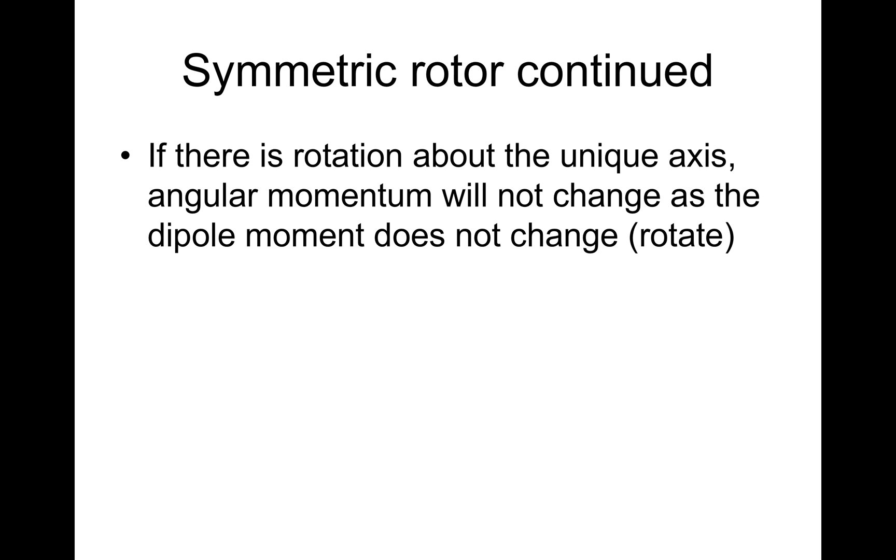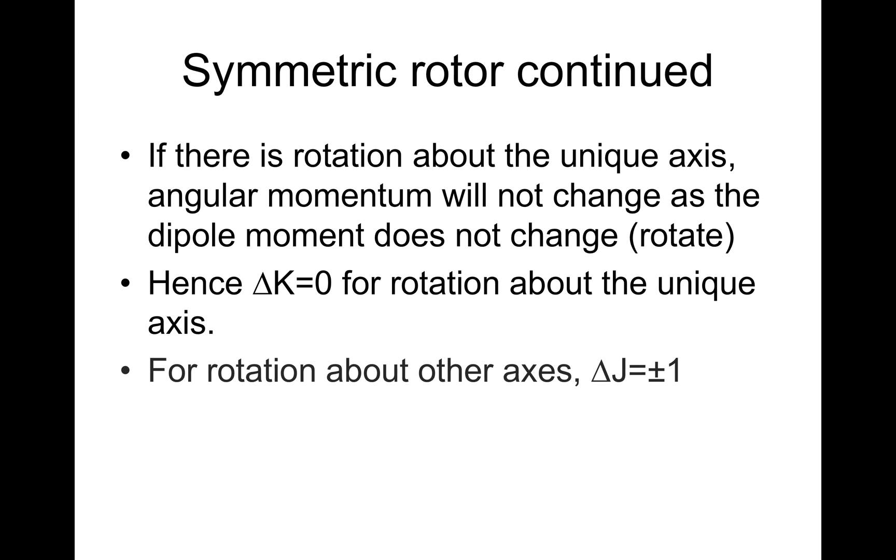If there is rotation about the unique axis, angular momentum will not change, as the dipole moment does not change. Hence, ΔK equals 0 for rotation about the unique axis. For rotation about other axes, ΔJ still...